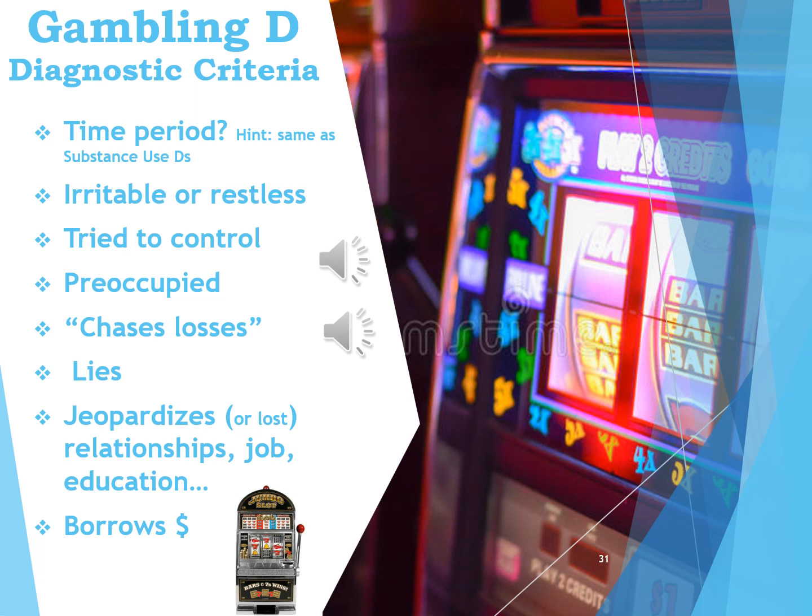Let's look at the last disorder of our chapter — gambling disorder — in the category of non-substance related disorders. The time period symptoms must be present is 12 months. Key symptoms include irritability or restlessness, attempts to control the disorder, preoccupation with gambling, chasing losses by getting more money after losing, lying to cover it up, jeopardizing or losing relationships, jobs, or education, and borrowing money from friends and family to get out of trouble.